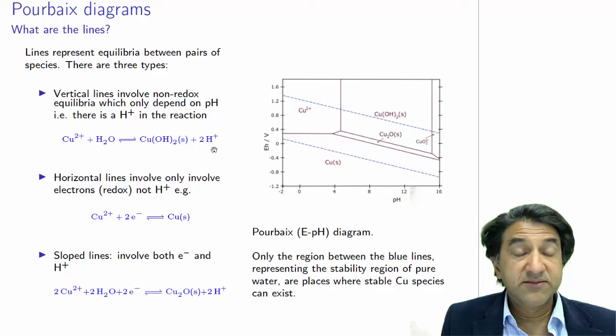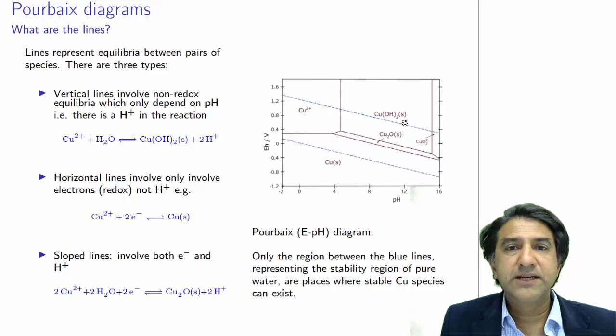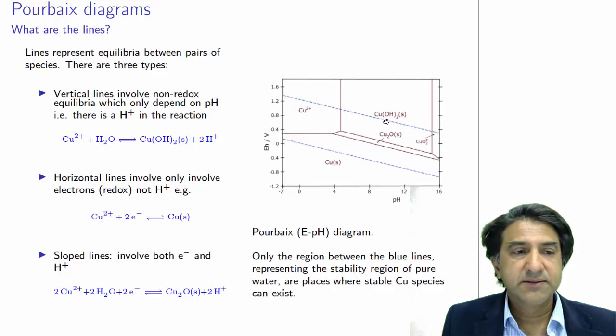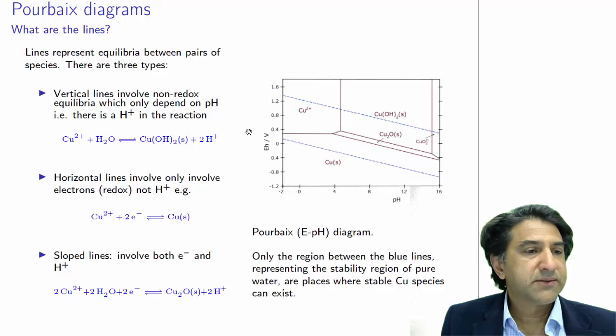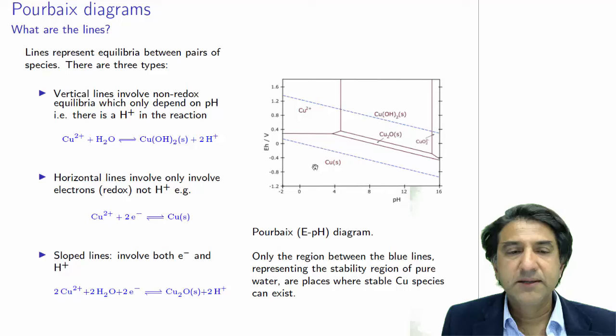And here we have written the equilibrium line. Now, why is this a vertical line? We can see that the vertical line occurs at a particular pH and at a range of potentials. That is, that this equilibrium between Cu2+ and Cu(OH)2 solid doesn't involve any electrons. It's not an electrochemical reaction. We have Cu2+, and here we have Cu2+ in the hydroxide. So clearly not an electrochemical reaction. And that is the reason why this is a vertical line. You can see here the reaction also doesn't involve any electrons for that particular equilibrium.